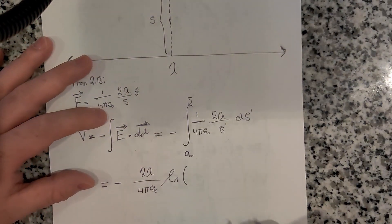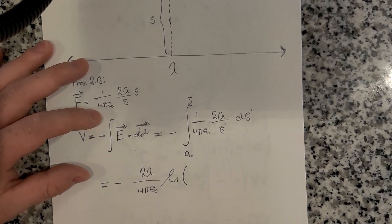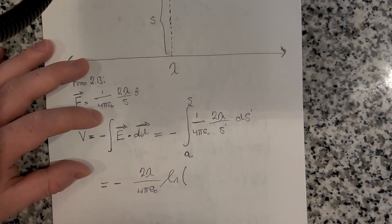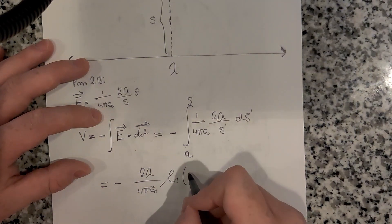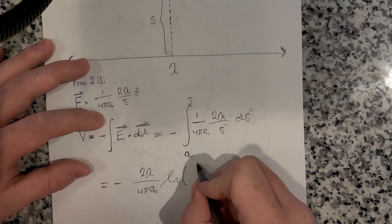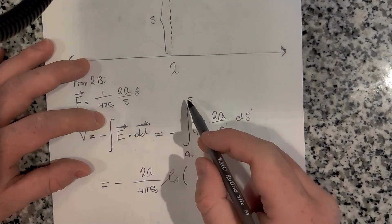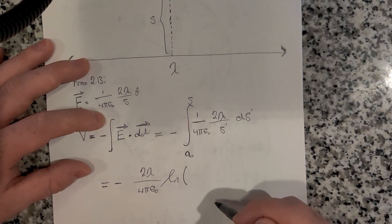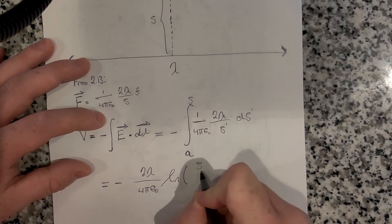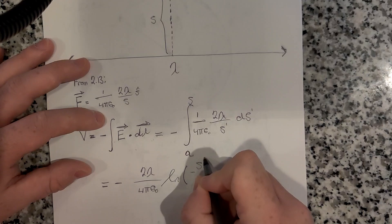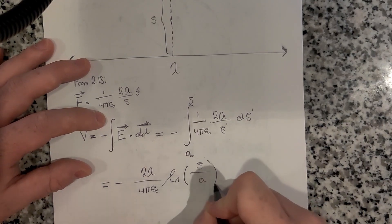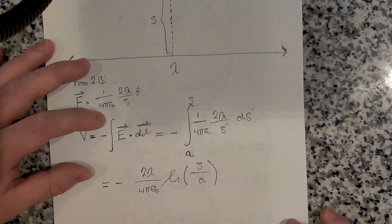We have the natural log of s minus the natural log of a, which would just be the natural log of s over a, if I remember my natural logarithm rules correctly.